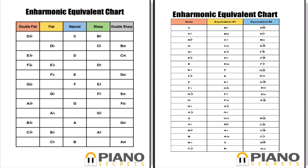The chart on the right is set up differently: you've got your notes in the left column, then the first equivalent note, and then the second equivalent note going across. All the notes go in order from C, C-sharp, D-flat, D, D-sharp, E-flat, E, E-sharp, F-flat, F, F-sharp — every single possible note name is listed down the left side. Across from each note, you have its equivalent names. So C has B-sharp and D double flat. C-sharp has B double sharp and D-flat. If you look at both charts together, you can see how they match up — C, B-sharp, D double flat appears in both.